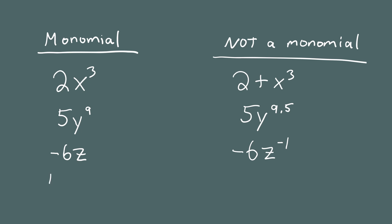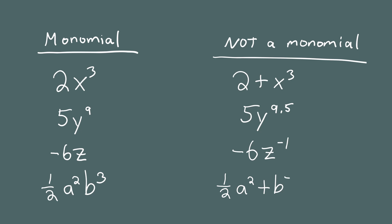For our fourth example, we have one-half times a squared times b to the third. This shows that the number in front doesn't have to be a whole number — it can be any number, in this case the rational number one-half. Also, you can use more than one variable in a monomial as long as they're all multiplied together. The exponents of a and b are 2 and 3, both positive integers. Compare this with one-half a squared plus b to the negative 3.5 power — there are two problems: we're adding two terms instead of multiplying, and the exponent for b is neither positive nor an integer. So this is really not a monomial.